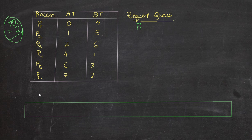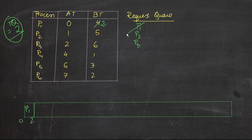First of all, process P1 arrives in the CPU, so we execute P1 for 0 to 2 seconds because the time quantum is 2, even though the burst time is 4. So the remaining time will be 2 seconds now. Within 2 seconds, P2 and P3 have arrived in the CPU, so we put P2 and P3 in the queue. P1 we have executed already, but P1 has not been completed fully — P1 still has remaining burst time left.